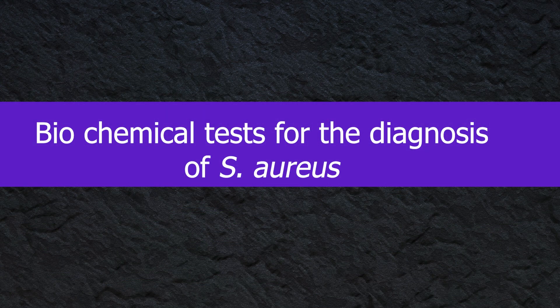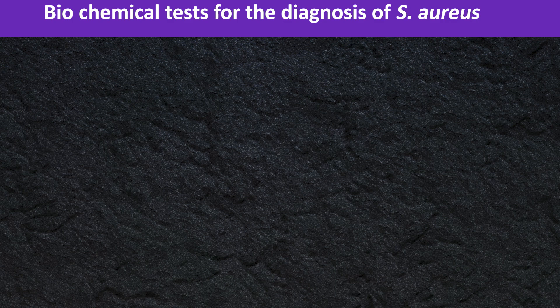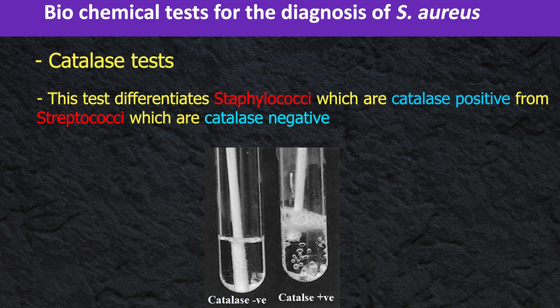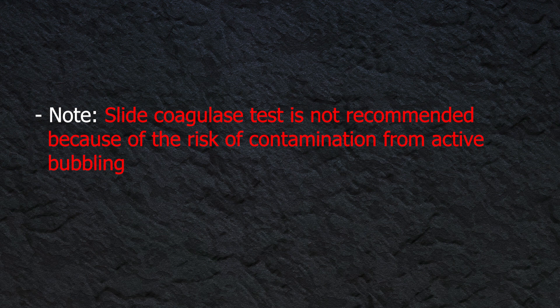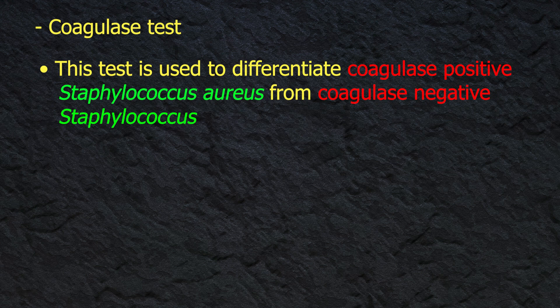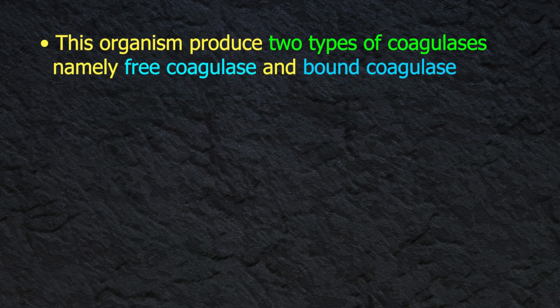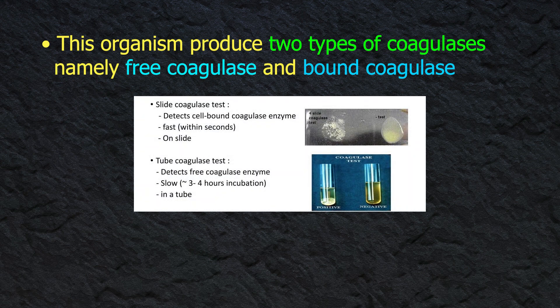Biochemical tests for diagnosis of S. aureus: The catalase test differentiates staphylococci, which are catalase-positive, from streptococci, which are catalase-negative. Note: the slide coagulase test is not recommended due to the risk of contamination from active bubbling. The tube coagulase test differentiates coagulase-positive staphylococci from coagulase-negative staphylococci. Coagulase is an enzyme produced by S. aureus that converts fibrinogen in plasma to fibrin. This organism produces two types of coagulase: free coagulase and bound coagulase.